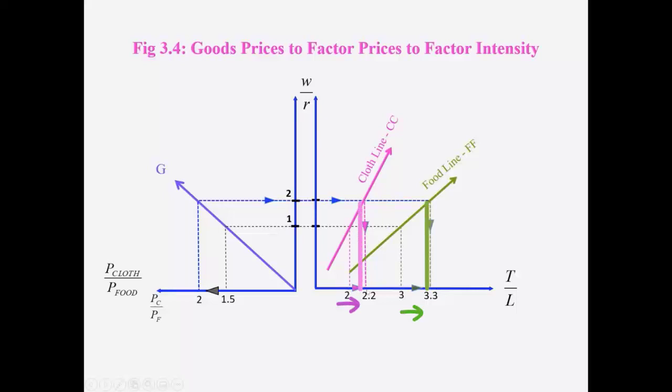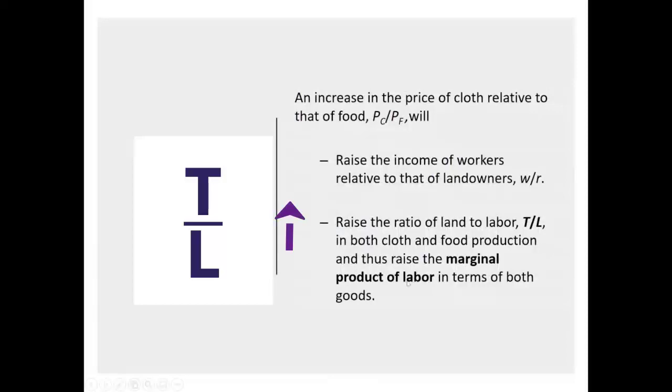Now, when it becomes more land intensive, that means each unit of labor has more land to work with. The marginal productivity of labor would increase in both the sectors. MPL increases.